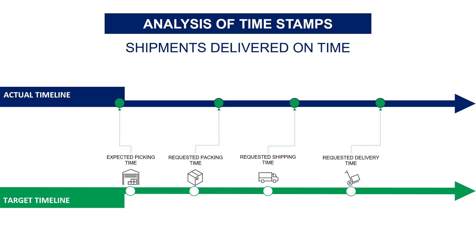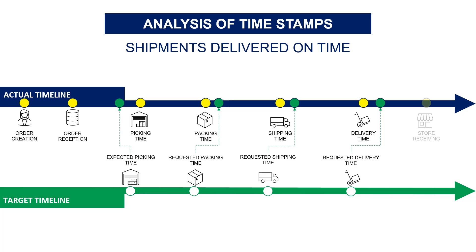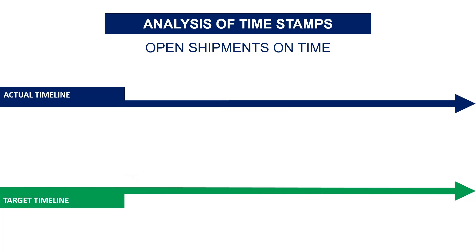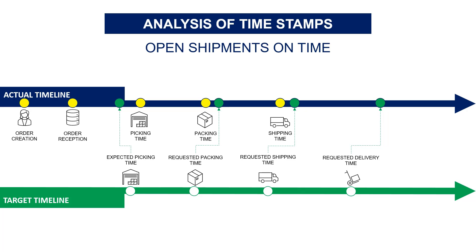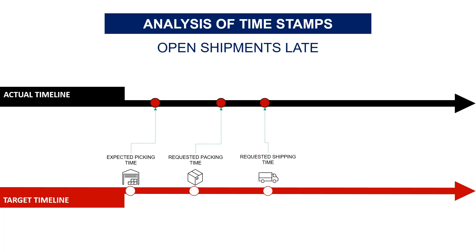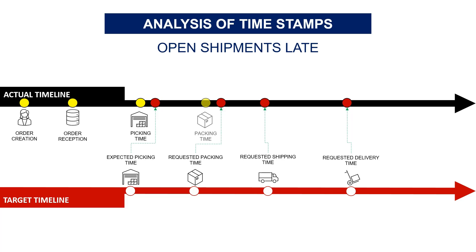By processing the timestamps, you will encounter different cases. When everything goes well, shipments are delivered on time — all timestamps are before the target. You can also have open shipments: shipments not yet delivered but still on time, meaning you haven't reached the last leg of transportation and all intermediate steps are before the target. And then you can have open shipments that are late — these are what we call transit shipments at risk. You haven't reached the last leg of transportation, but for some of them you are already late, making it difficult to catch up on the delay.